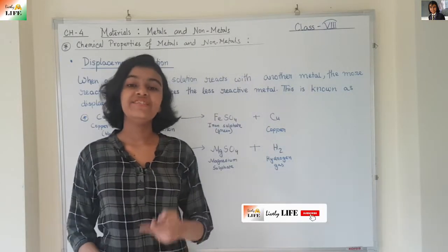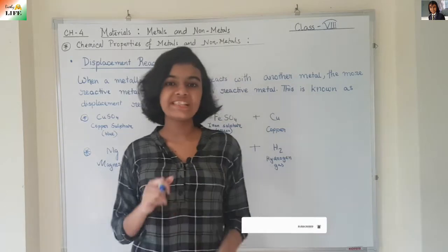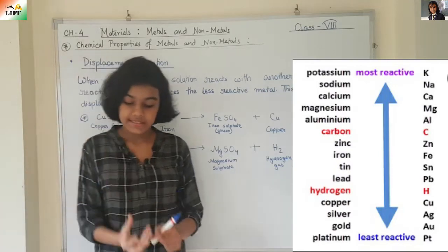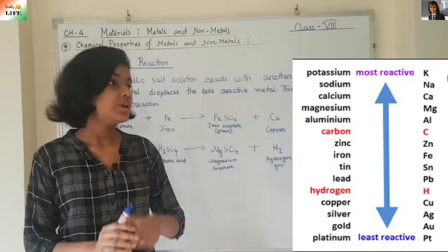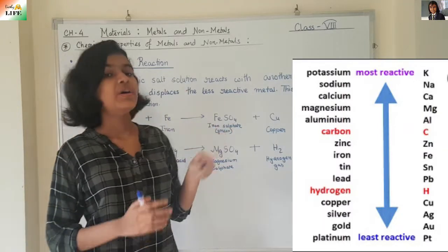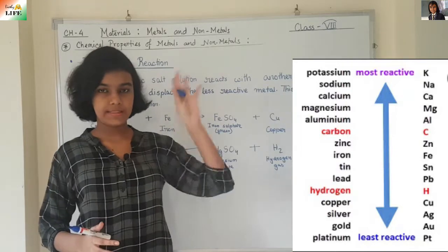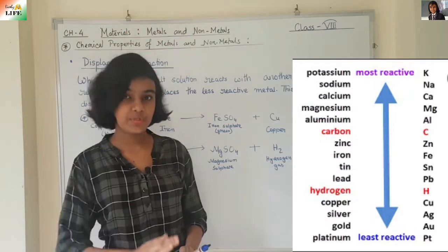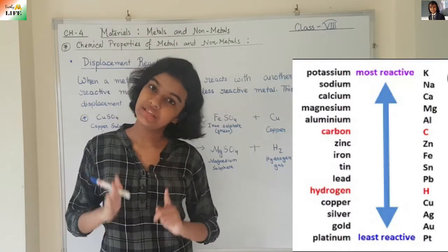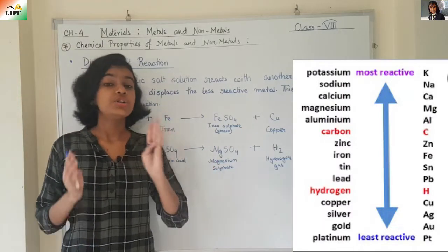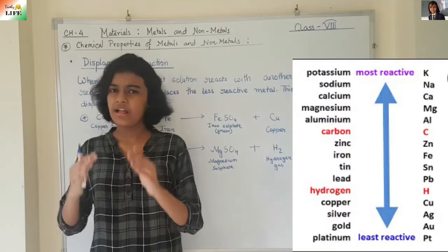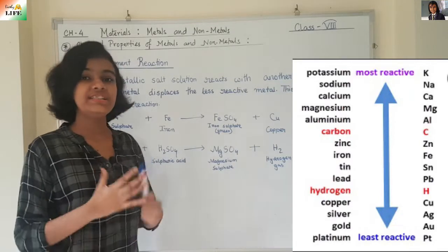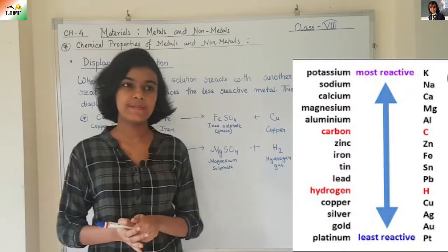Here comes the topic: activity series of metals. It represents the reactivity of certain metals. At the top is the most reactive metal, and at the bottom is the least reactive metal. As you go downward, the reactivity decreases. So how does this activity series help us understand displacement reaction?